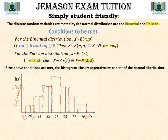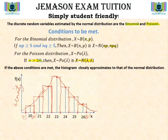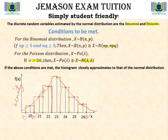Once this is done, we can connect the data points to appreciate the characteristic bell shape of the normal distribution approximately presented in the data. You can see the approximate nature of the data set when I superimpose the bell shape of the normal distribution on the histogram. The total area covered by this density histogram should be 1, and the total area covered by the bell-shaped curve of the normal distribution is also 1.